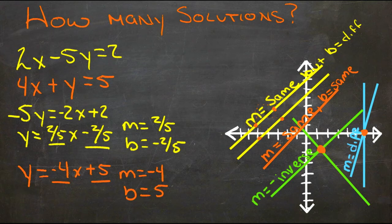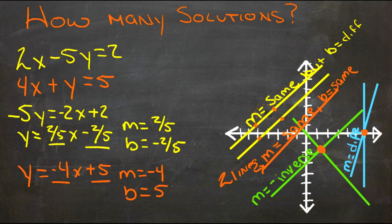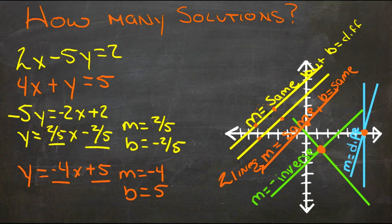The other possibility is when the slope is the same, but the y-intercept is also the same. This is actually two different lines that are just on top of each other. When they're right on top of each other, they have the same y-intercept and slope, and any point that's on one line is going to be on the other line.